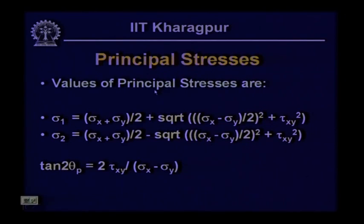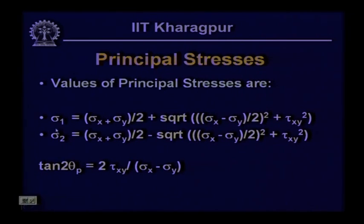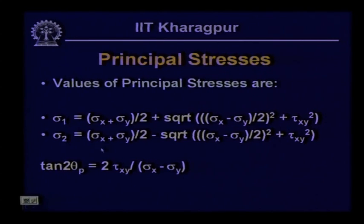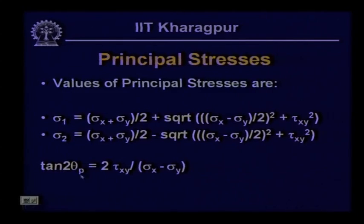From these equations we calculated the principal stresses — the maximum and minimum normal stresses acting on two different planes. Sigma 1 equals sigma x plus sigma y by 2, plus the square root of (sigma x minus sigma y by 2) squared plus tau xy squared. Sigma 2 equals sigma x plus sigma y by 2, minus the square root of (sigma x minus sigma y by 2) squared plus tau xy squared. The principal plane angle is given by tan 2 theta p equals 2 tau xy divided by sigma x minus sigma y.